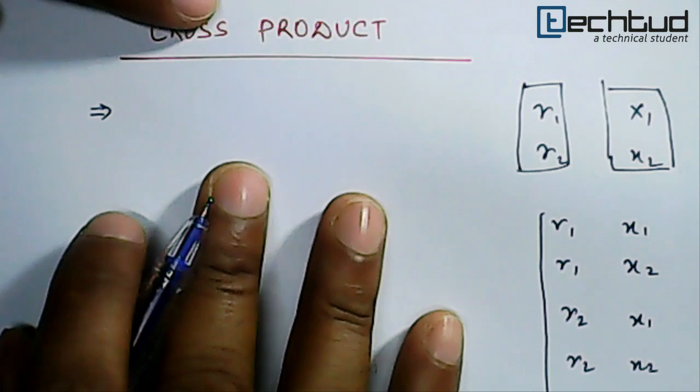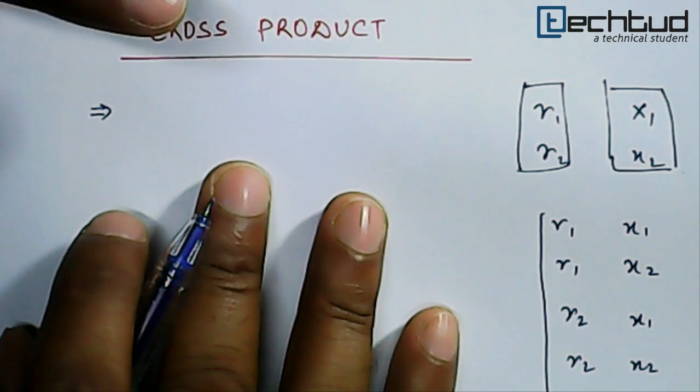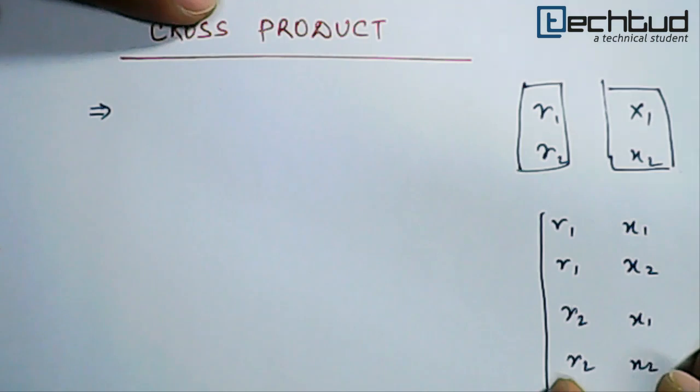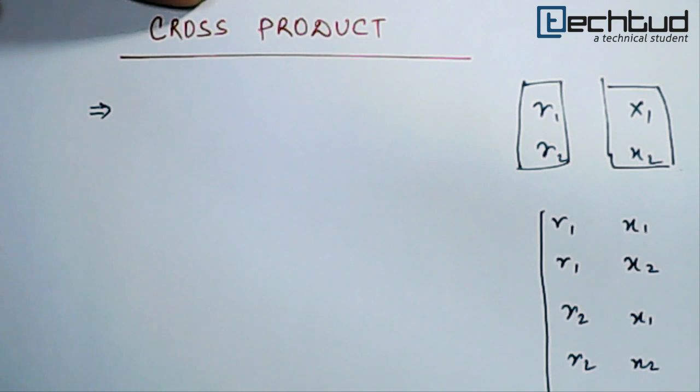So what we have to see is the first one is that this operation is really very costly and only few rows are meaningful for us. So generally what happens whenever we apply this cross product, it is generally followed by select operation. So let's write it down.